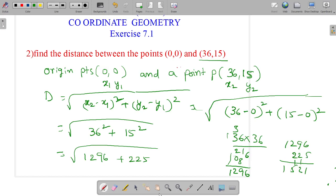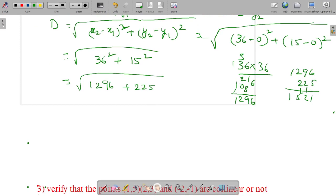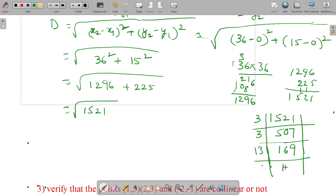1521. So the answer is square root of 1521. Find the square root of 1521, working through the calculation. 13 times 13 goes into 169.